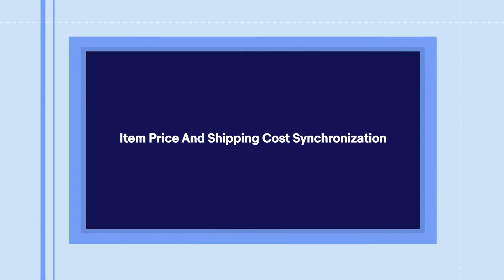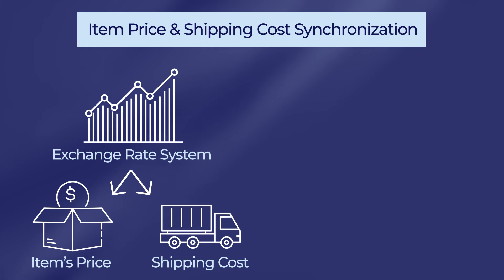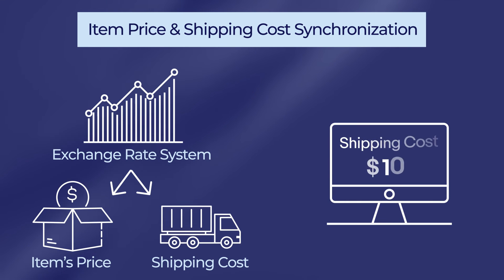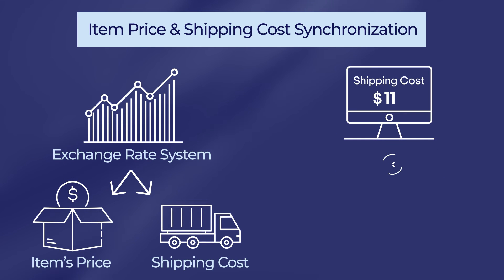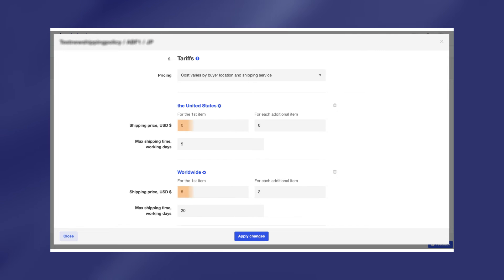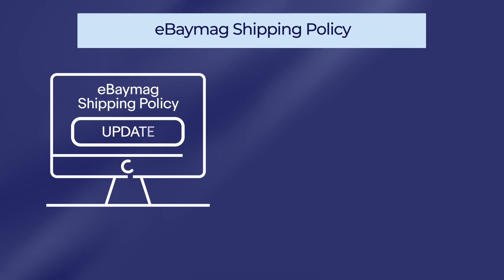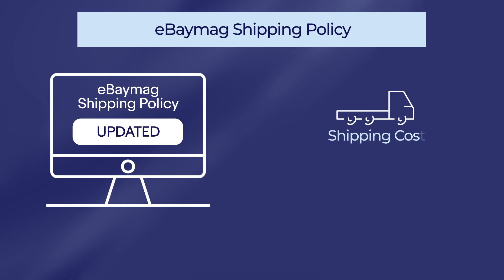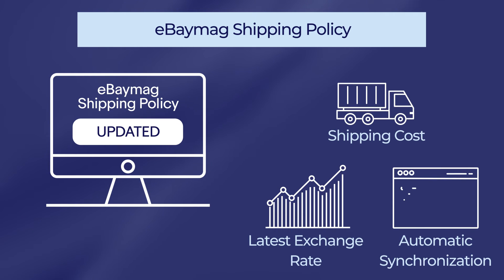Now let's move on to item price and shipping cost synchronization. Item price and shipping cost share the same exchange rate system. However, changing the shipping cost on the original site and then synchronizing it with eBay Mag and the international site is not supported. For listings that have been published, unless the seller updates the shipping policy on eBay Mag, the shipping cost won't be automatically updated if the exchange rate changes. When the eBay Mag shipping policy is updated, the shipping cost is calculated using the latest exchange rate and is automatically synchronized with the published listings.